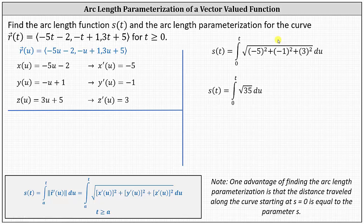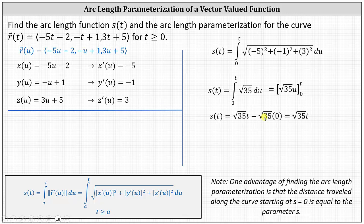Integrating, the antiderivative is square root of 35 times u. Evaluating, we determine F of t minus F of 0, which gives us square root of 35 times t minus square root of 35 times 0, which equals square root of 35 times t. We now have the arc length function: S of t equals square root of 35 times t.